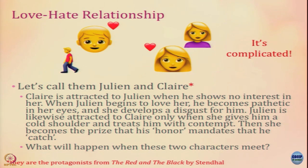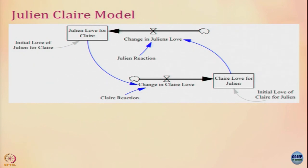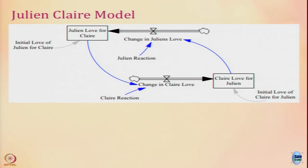How do we model this? Similarly, we will define a stock of love for each person and see if we can capture the personalities using parameter settings. The Julian and Claire model will look very similar to Romeo and Juliet — the stock values and flow equations do not change. We try to capture their personalities using Julian's reaction and Claire's reaction terms. In Julian's reaction, it is opposite to what Claire demonstrates: if Claire dislikes him, he likes her; if Claire likes him, he dislikes her. So we put Julian's reaction as minus 1.